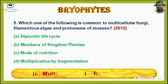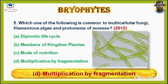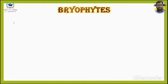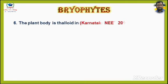Answer is Option D: Multiplication by fragmentation. Question No. 6. The plant body is thaloid in — Asked in Karnataka 2013.